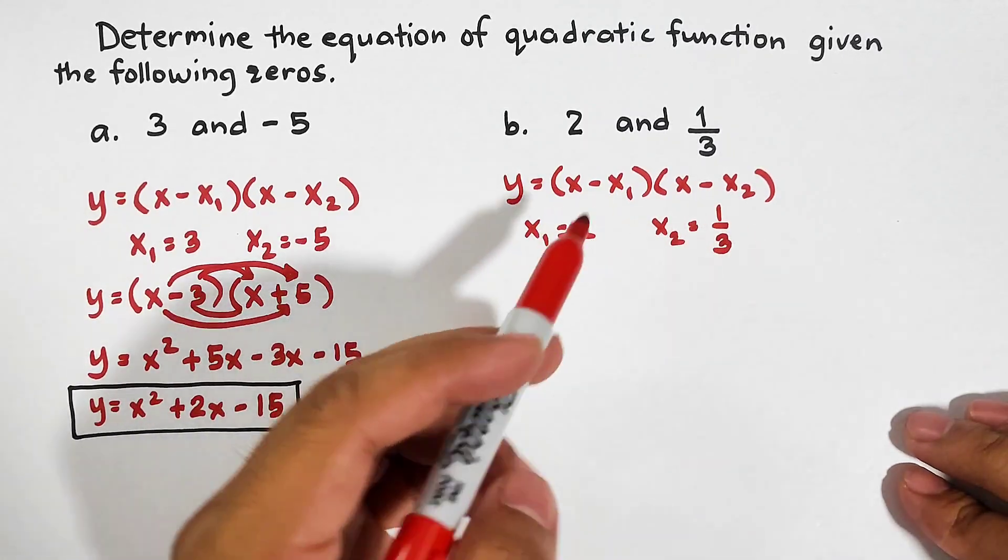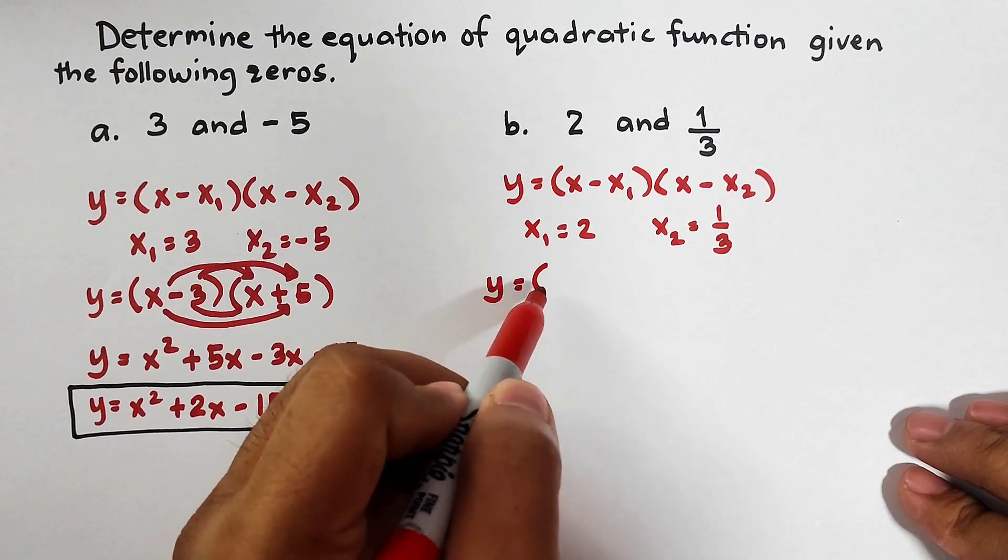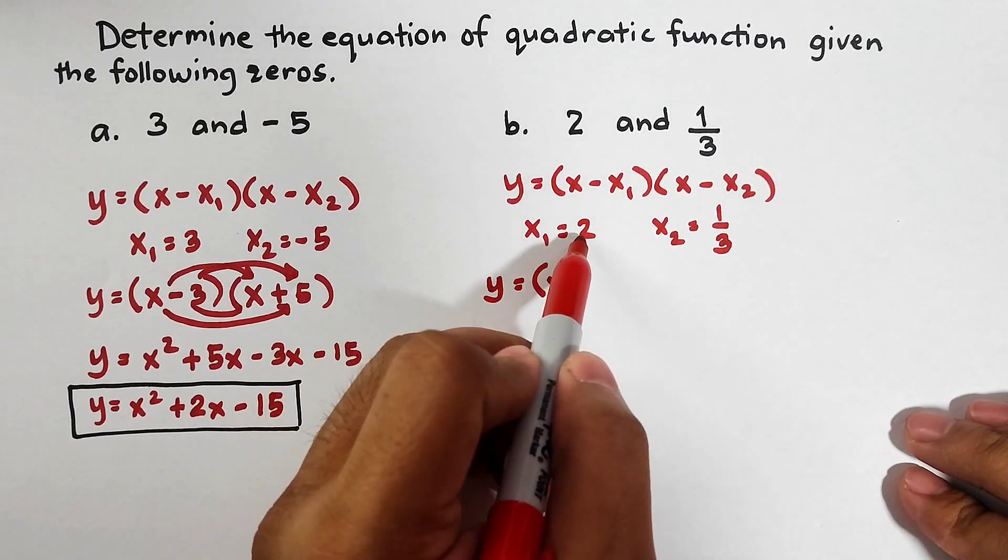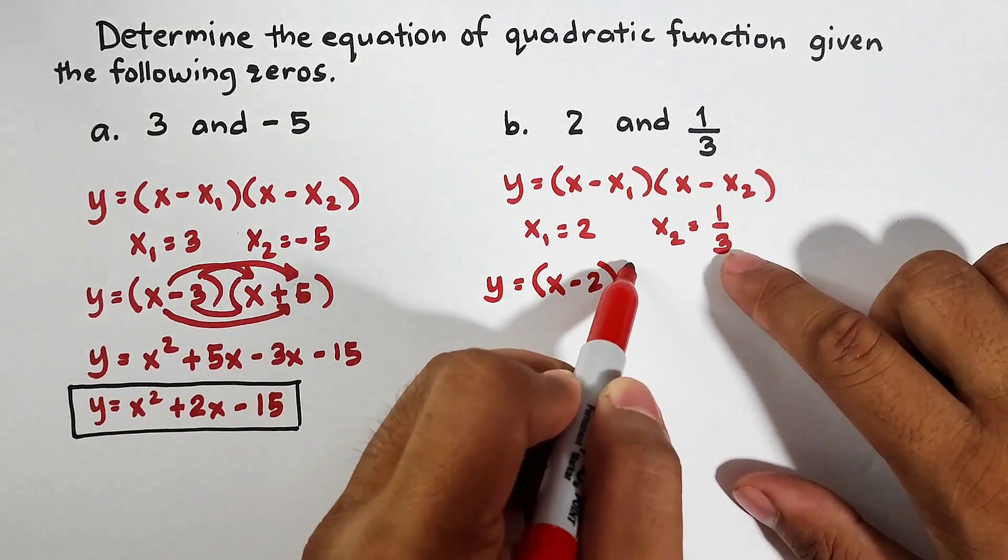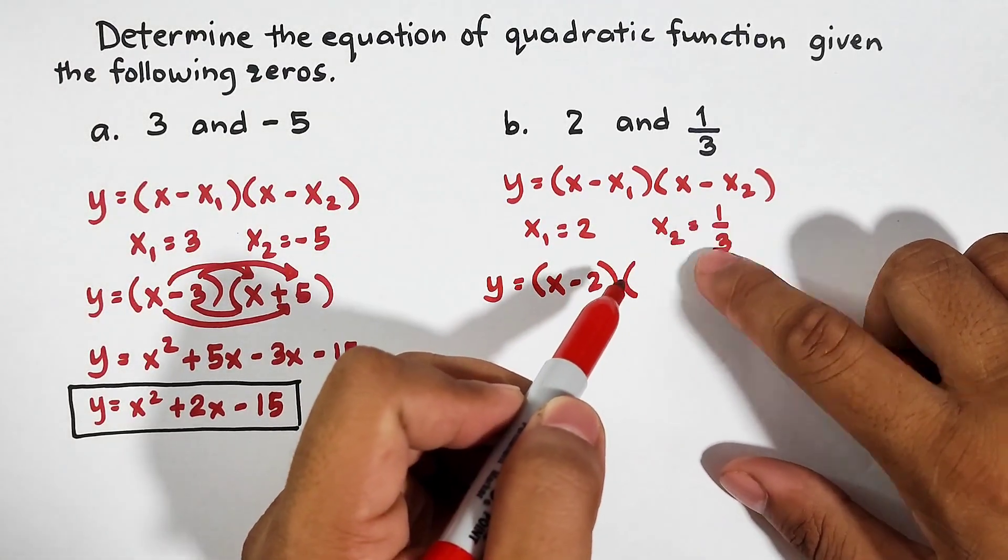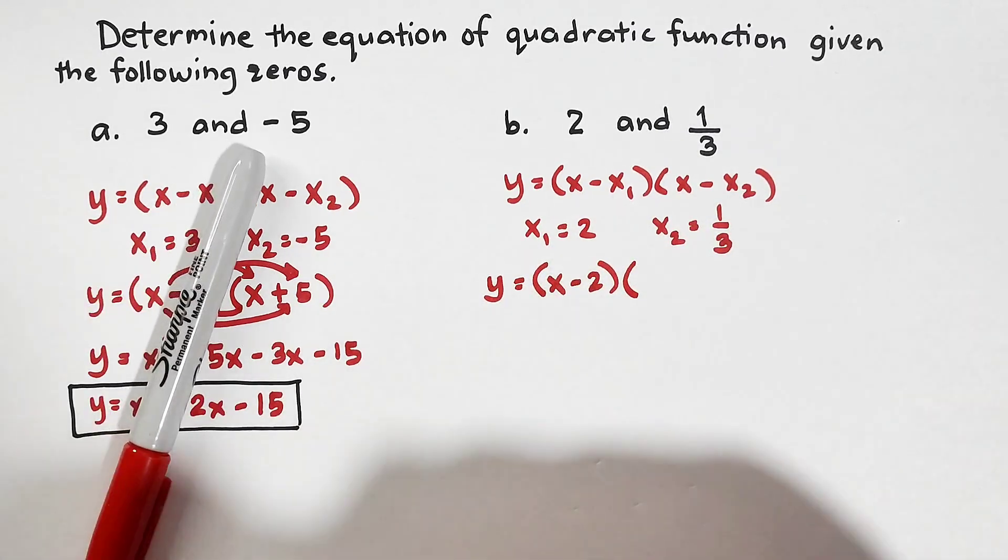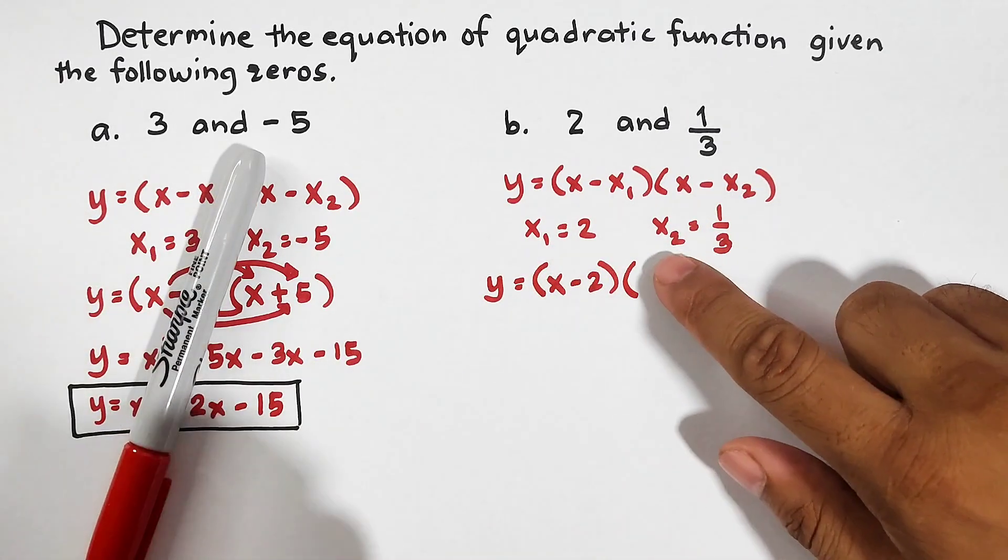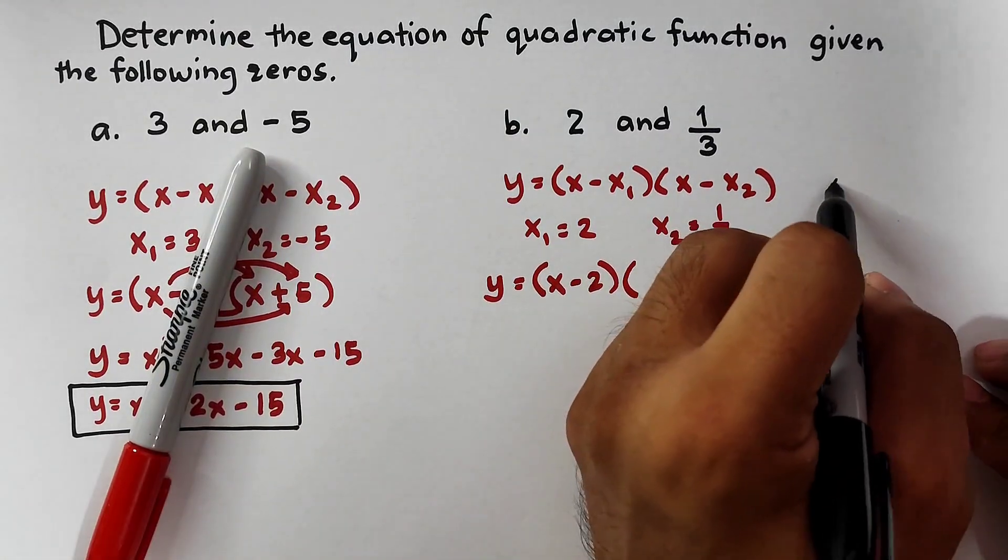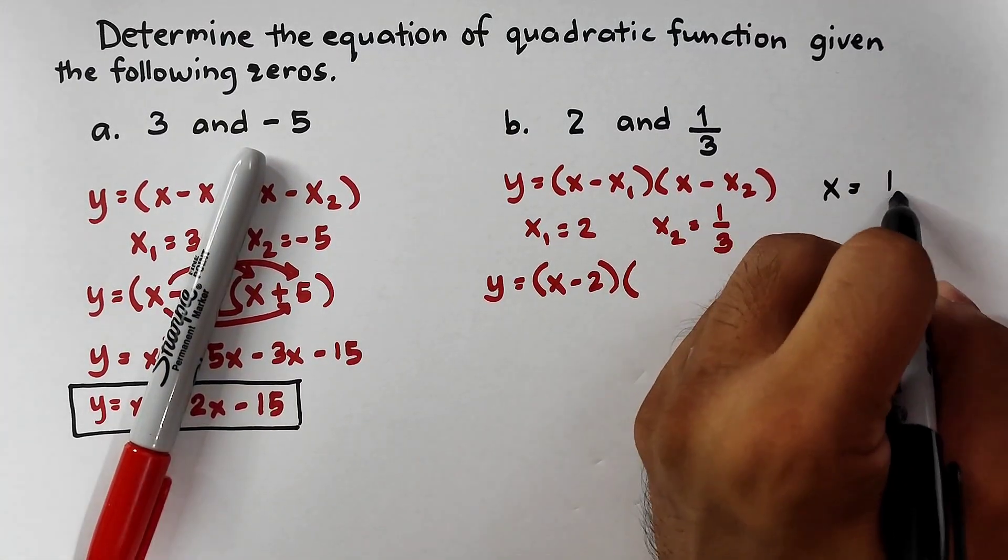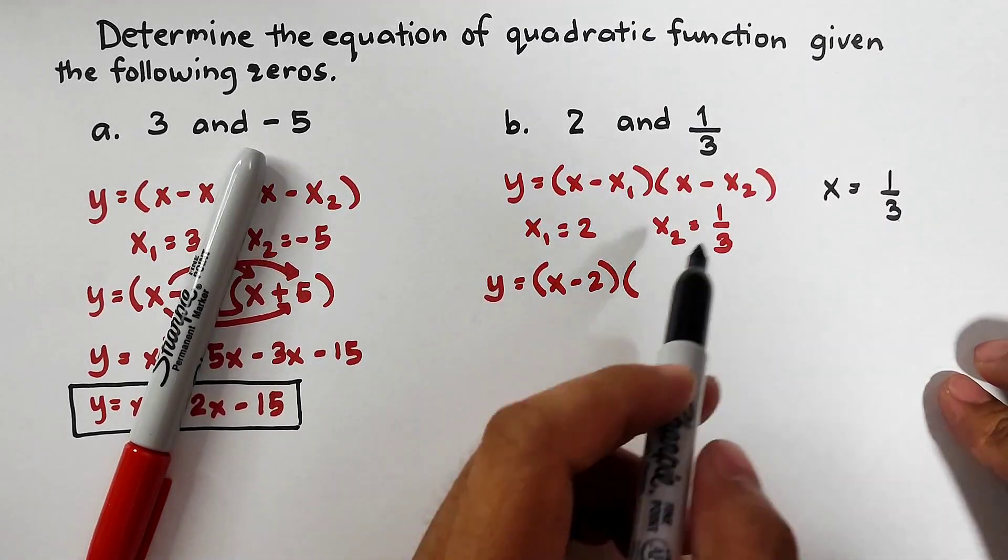Let's substitute. You have your y is equal to x. This is positive, definitely that would be minus 2. And as for this one, we need to do something here. So, we will create a separate solution to the right side of the paper. Since this one is x sub 2 is equal to 1 third, this one is also equal to x is equal to 1 over 3. What we need to do is to create a binomial.